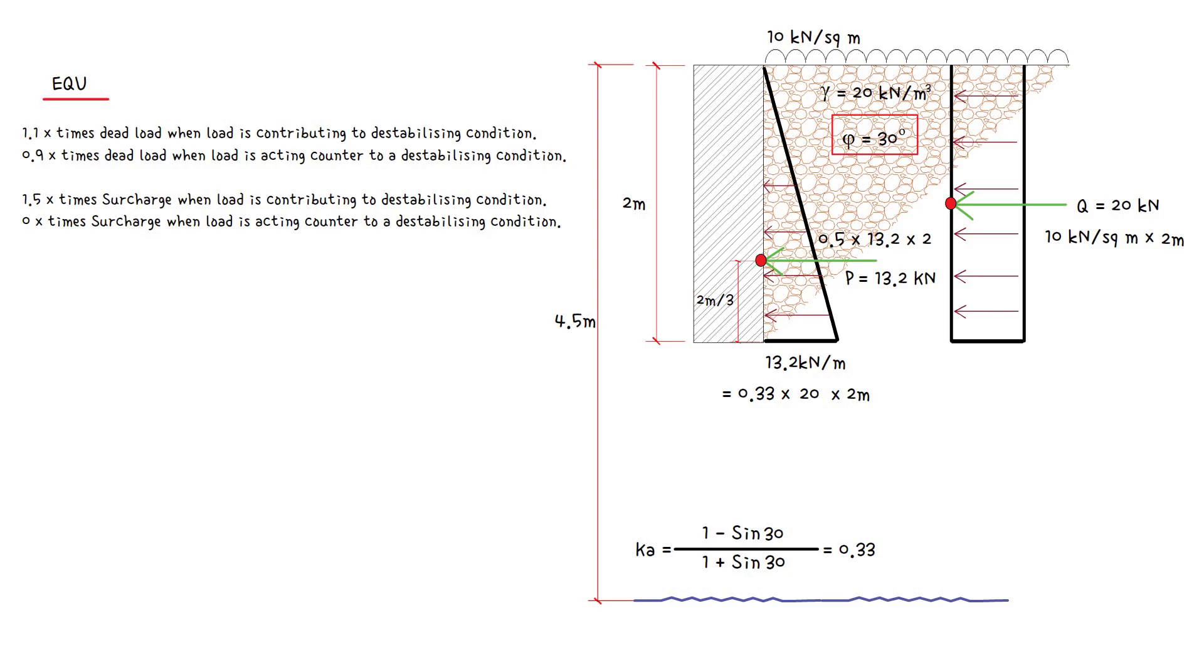When designing the retaining structure, EN 1990 offers three approaches with respect to the application of partial factors. The UK National Annex to EN 1990 states that Approach 1 is adopted. In this approach, two load combinations, known as sets, are considered.